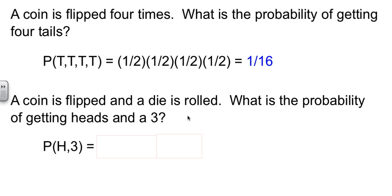Here's another case. We have a coin being flipped and a die being rolled. We want the probability that we get a heads and then a three.